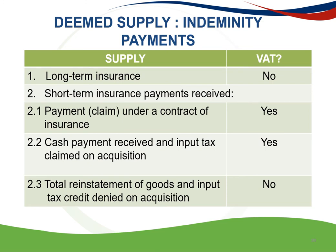Regarding deemed supplies for indemnity payments: premiums for long-term insurance policies do not attract VAT as this is an exempt supply of a financial service. When a vendor receives a claim under a short-term insurance policy, the vendor is in certain circumstances obliged to account for output VAT on the claim received. This applies where a vendor receives an indemnity payment relating to taxable supplies — both zero-rated and standard-rated — or is indemnified by payment to another person and input tax was claimed on acquisition. There is no deemed supply where payments relate to the total reinstatement of goods for which an input tax deduction was denied — in other words, no output VAT will be levied.